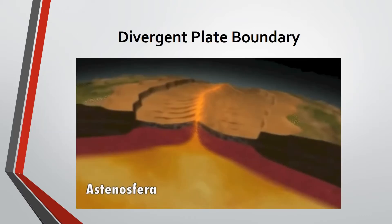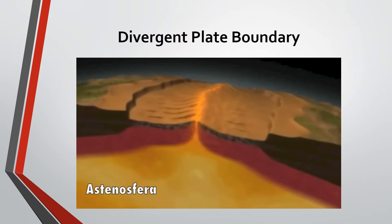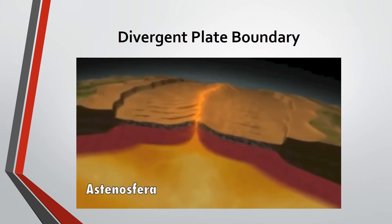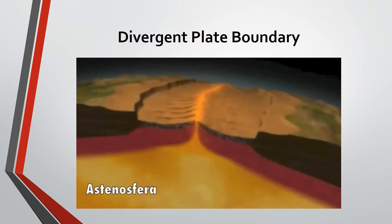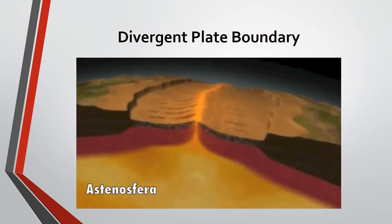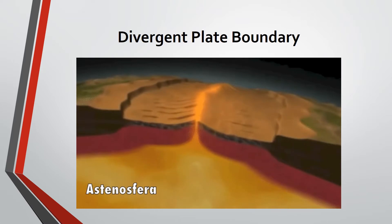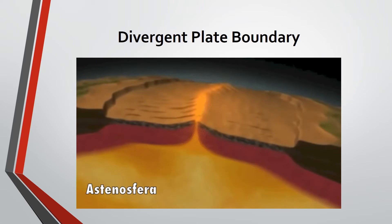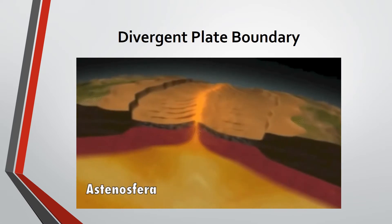In our last video, you have learned the types of convergent plate boundaries where plates collide. Now, what causes these plates to be pushed toward each other? It is because other plates from other parts of the world are actually spreading apart or moving away from each other. This type of plate boundary is called divergent plate boundary.